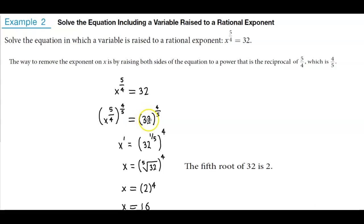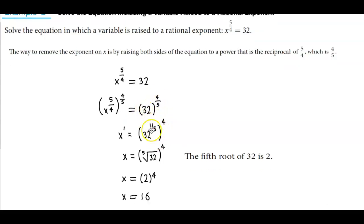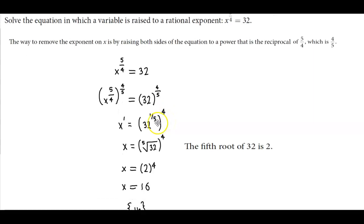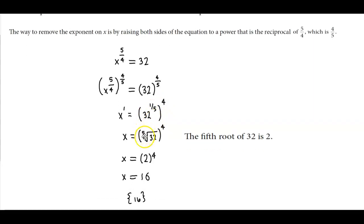On this side, we have 32 raised to the 4 fifths. Using our properties from the previous slide, we can rewrite this as 32 to the 1 fifth raised to the fourth power. Well, 32 to the 1 fifth is the same thing as the fifth root of 32.